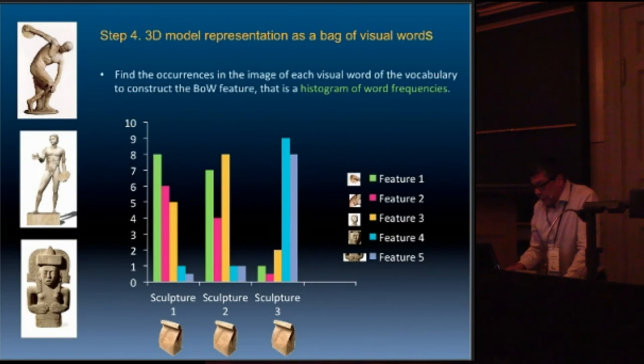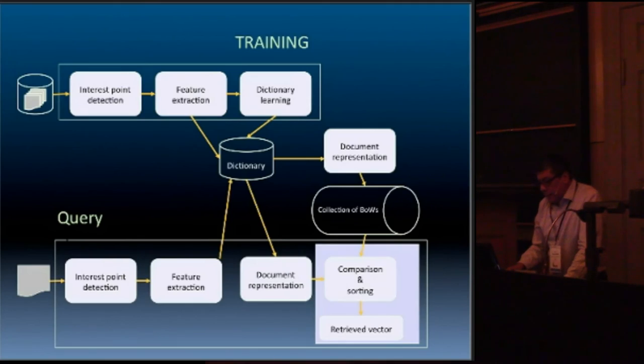Again, we have our models. This is the pipeline. We do the detection of points, the visual extraction, the dictionary learning. We store the dictionary. Then is the document representation. Every model is represented as a bag of words or a bag of features. And then in the lower part of the graphic we see the query process, which is just in reverse.